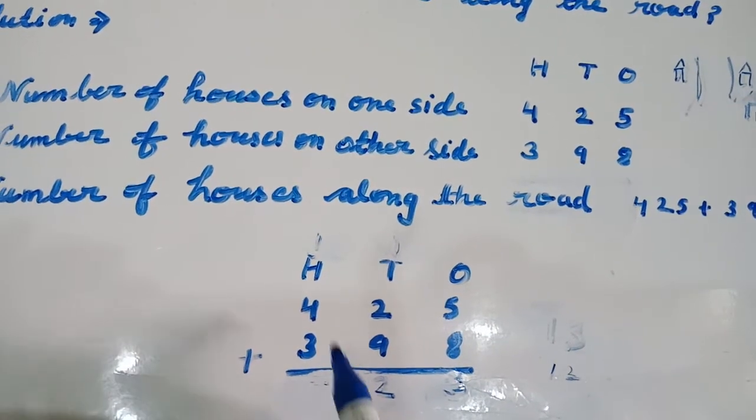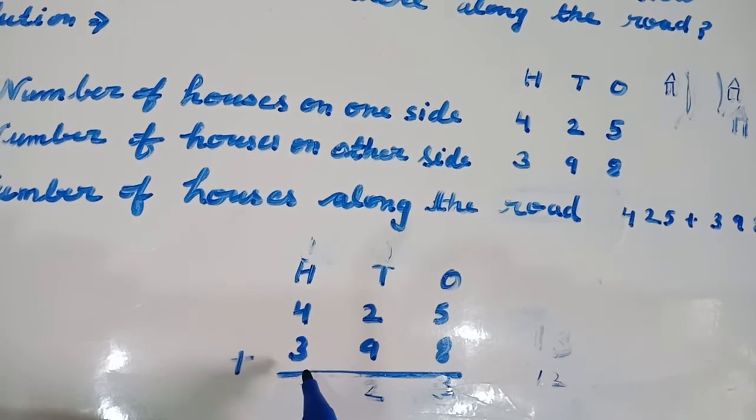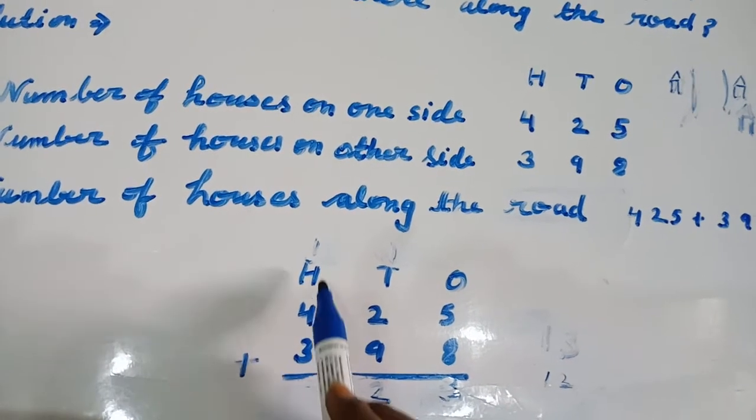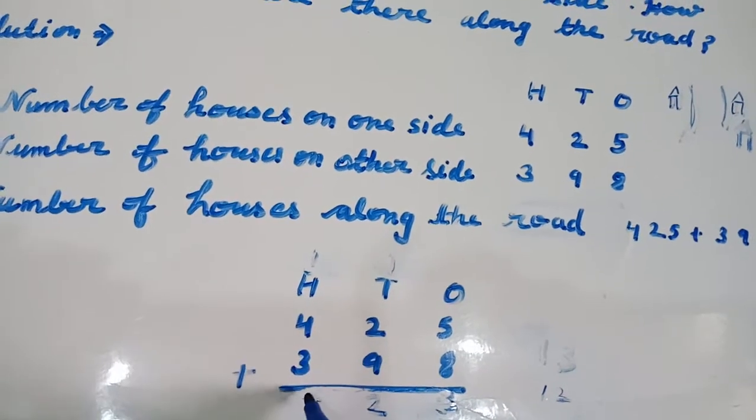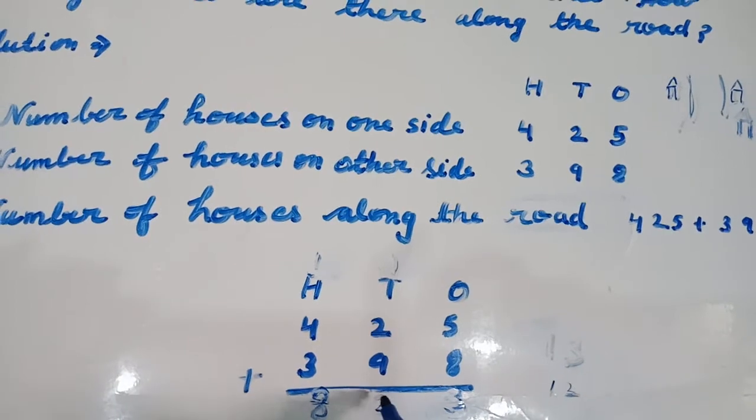Now, add 100th column. 4 plus 3 equals to 7 and add 1 carry also is 8. So 823.